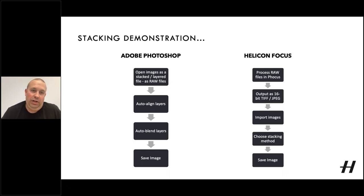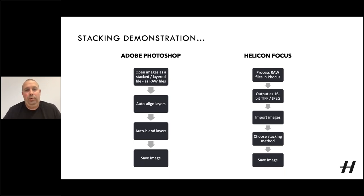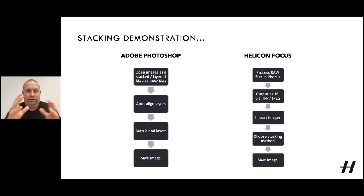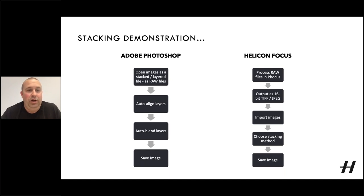The auto-align is necessary because despite the subject not moving and the camera being locked off on a tripod, when you change the focus of a lens, the subject will breathe a little bit in the size of your image space — it will actually change size. So it's important to align the layers to make them consistent. We then auto-blend the layers, which is the other way of saying it stacks them, and then we can save the resulting image.